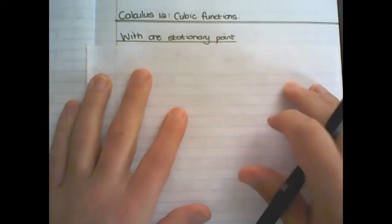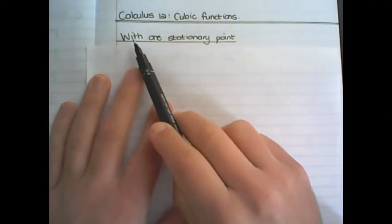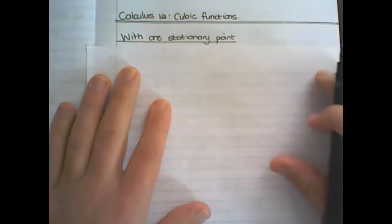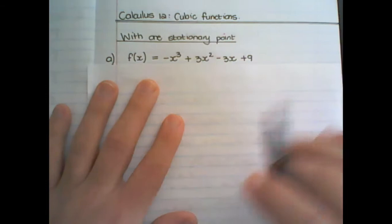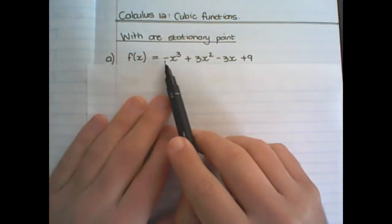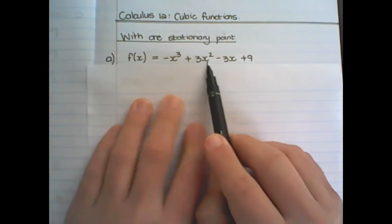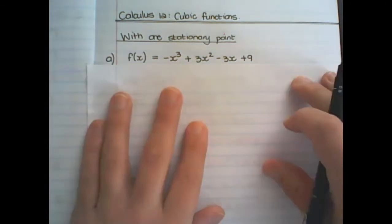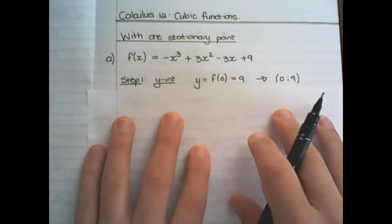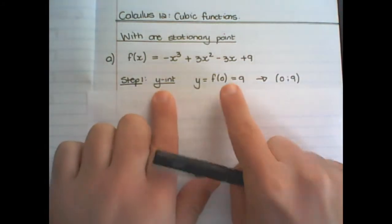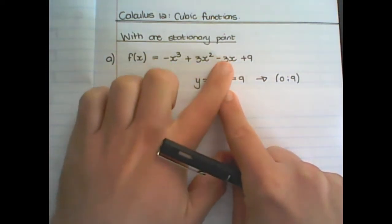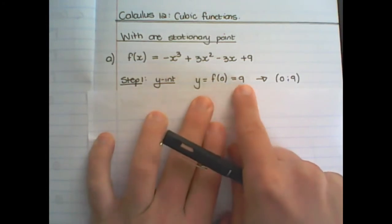In the first example for today we are going to draw a cubic function with one stationary point. We have f(x) equal to negative x cubed plus 3x squared minus 3x plus 9. Step one is to find the y-intercept, and we find the y-intercept by replacing x with zero. If I replace x with zero in this equation, I find that y is equal to 9.